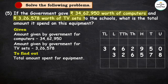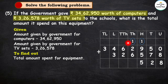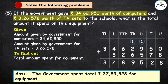Let's add these two amounts. 0 plus 8 is 8. 5 plus 7 is 12, carry 1. 9 plus 5 plus 1 is 15, carry 1. 2 plus 6 plus 1 is 9. 6 plus 2 is 8. 4 plus 3 is 7. And 3. So the final answer is: the government spent a total of Rs. 37,89,528 for equipment.